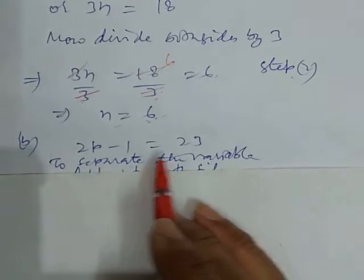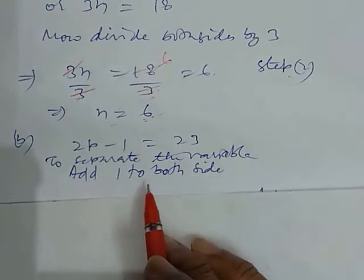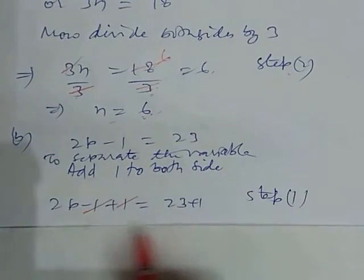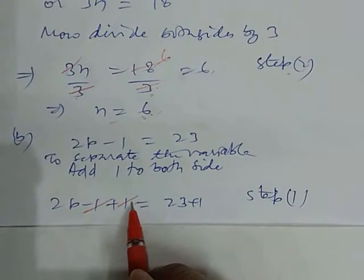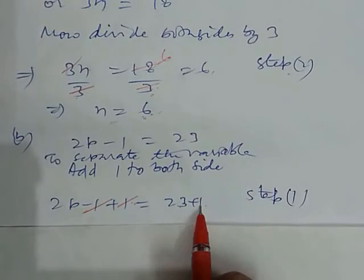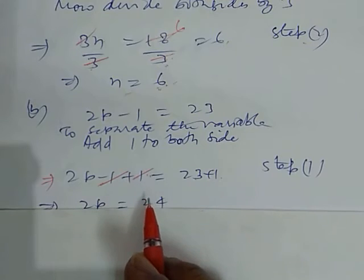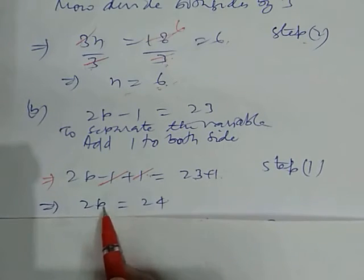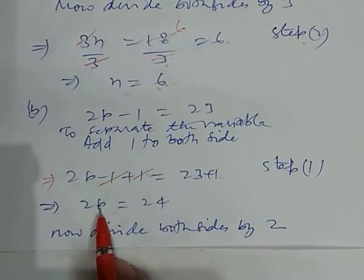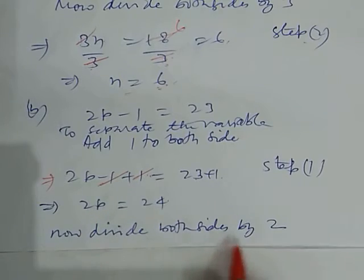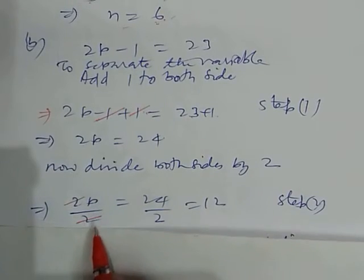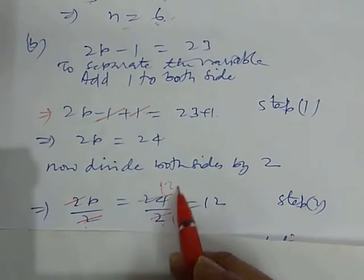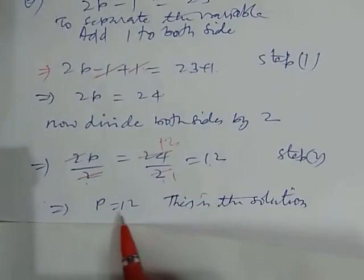Next example: 2p minus 1 equals 23. Step one: add 1 to both sides to remove minus 1. So 2p minus 1 plus 1 equals 23 plus 1. These cancel out, giving us 2p equals 24. Step two: 2 is in multiplying form, so we divide both sides by 2. So 2p over 2 equals 24 over 2. The 2 cancels out and we get p equals 12. This is the solution.